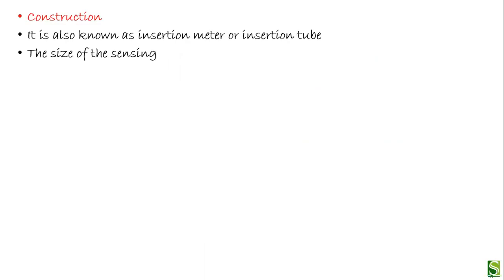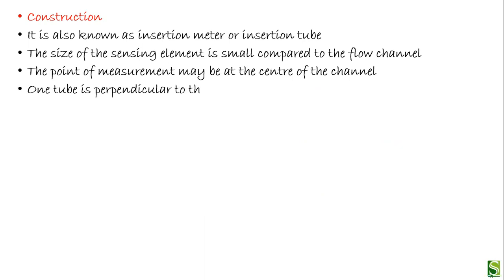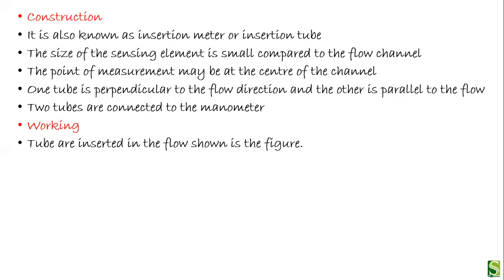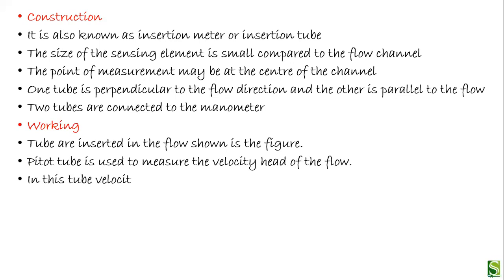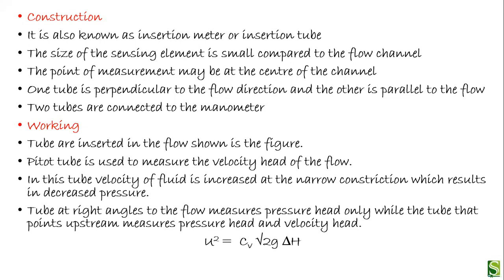The size of the sensing element is small compared to the flow channel. The point of measurement may be at the center of the channel. One tube is perpendicular to the flow direction and the other is parallel. Both tubes are connected to the manometer. The tube is inserted in the flow as shown in the diagram. The pitot tube measures the velocity head of the flow. The formula used is: μ² = Cᵥ√(2g·Δh), where Cᵥ is the coefficient of the pitot tube.